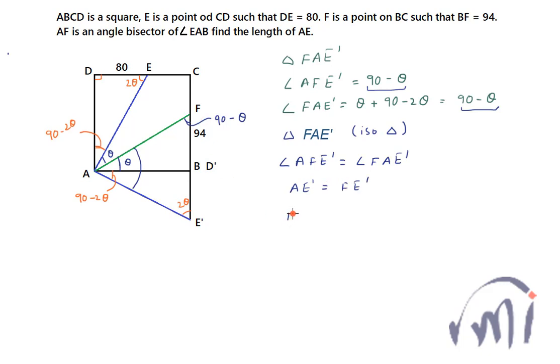And FE'D' is actually equal to 94 plus D'E' and D'E' was actually equal to 80. So 94 plus 80, so this will be equal to 174. So AE'D' which was equal to FE'D' and which is actually equal to AE will also be equal to 174.